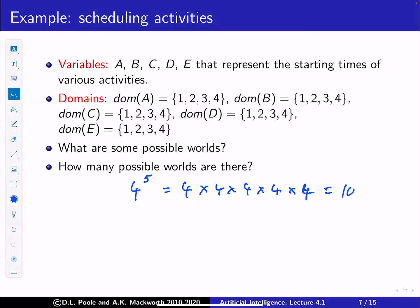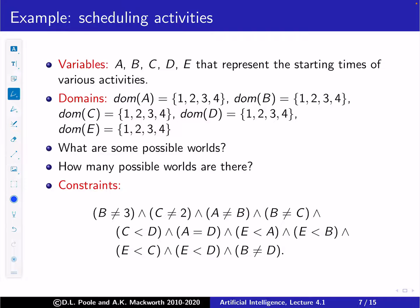Four to the fifth is 1024 possible worlds. We can imagine enumerating them, but in larger problems there are too many. Here are some constraints: B ≠ 3, C ≠ 2, A ≠ B, B ≠ C, C < D, and E < A < B.